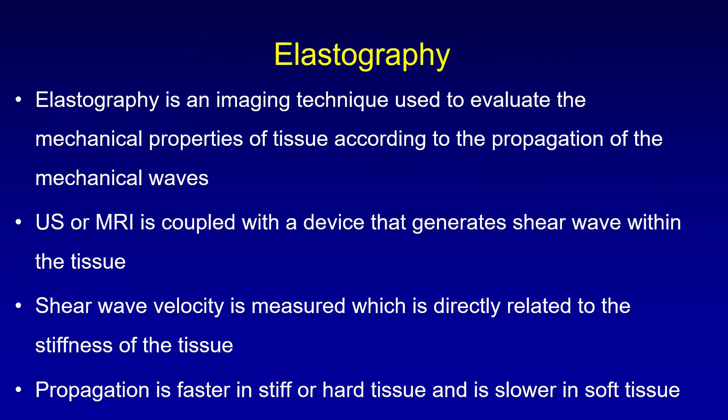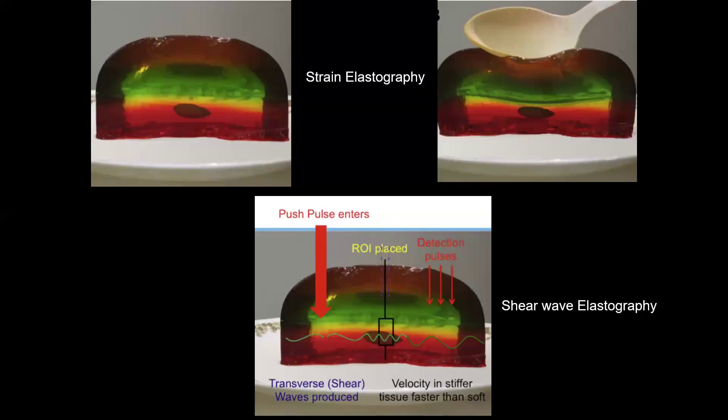Elastography is an imaging technique used to evaluate the mechanical properties of tissues according to the propagation of mechanical waves. Ultrasound or MRI may be coupled with a device that generates shear waves within the tissue. The shear wave velocity is measured, which is directly related to the stiffness of the tissue. The propagation of shear waves is faster in stiff or hard tissues and slower in soft tissues. In strain elastography, it is a direct compression of the tissue, and we infer the stiffness according to the deformity of the tissue.